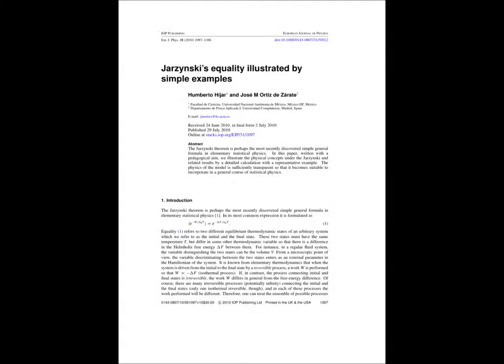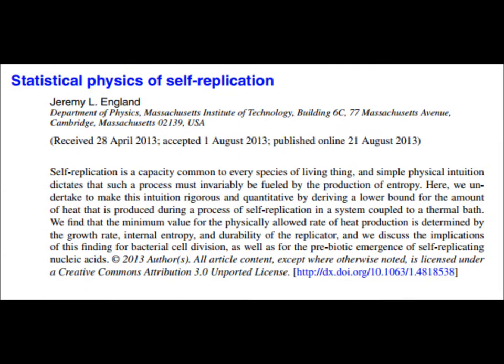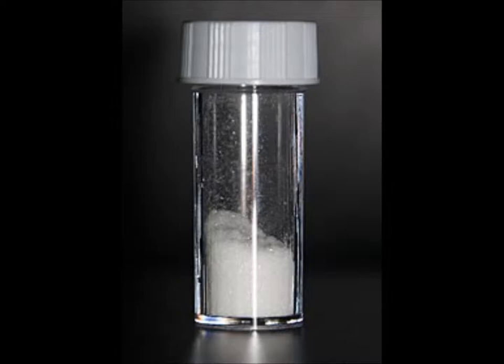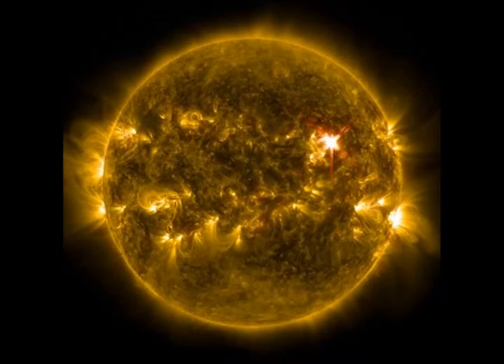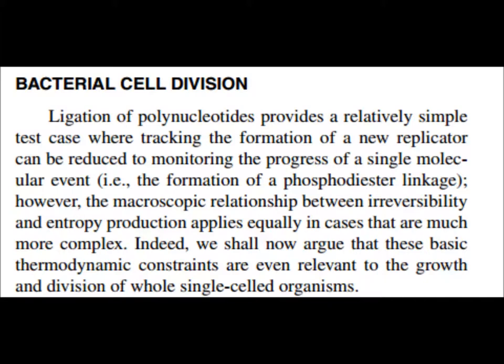Using a formula by Draczynski and Crook, England derived a generalization of the second law of thermodynamics. This holds that a system of particles within a certain environment, subject to an external energy source such as the sun, will dump their heat into the surrounding environment. England then determined how such systems tend to evolve over time as they increase their irreversibility. To quote: 'The more likely evolutionary outcomes are going to be the ones that absorb and dissipate more energy from the environment's external drive on the way to getting there.'